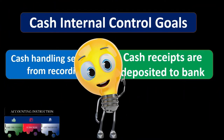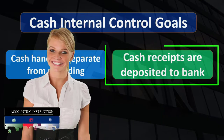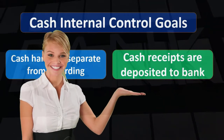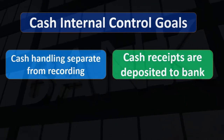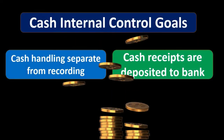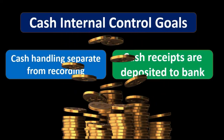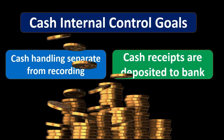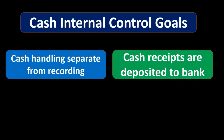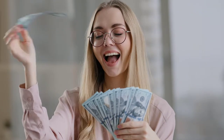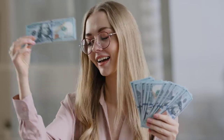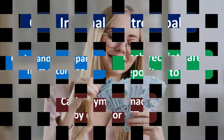Cash receipts should be deposited to the bank. We want to make sure that cash receipts are going to the bank as soon as possible, hopefully on a daily basis, so we're not accumulating cash. We don't want cash piling up because that creates a greater risk of theft and a greater loss if theft does occur. Depositing promptly helps safeguard cash and improves accuracy since the bank maintains a separate record of cash.